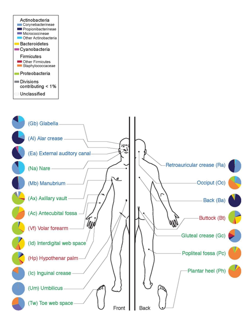A microbiota is an ecological community of commensal, symbiotic and pathogenic microorganisms found in and on all multicellular organisms studied to date, from plants to animals. A microbiota includes bacteria, archaea, protists, fungi and viruses.